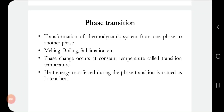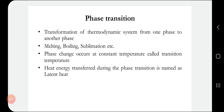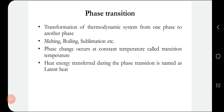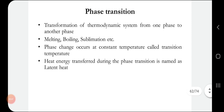Good morning. Today we are discussing Phase Transition and the Clausius-Clapeyron Equation. Phase transition is the transformation of a thermodynamic system from one phase to another phase. The types include first-order phase transition and second-order phase transition. Examples of first-order phase transitions are boiling, where the system changes from liquid state to gas state, and sublimation.